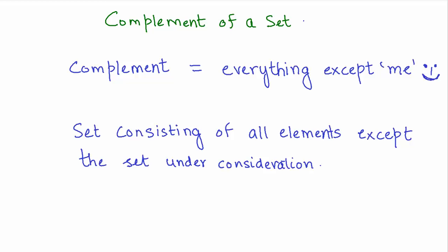Let's look at what we mean by complement of a set. To put it in a funny way, complement simply means a set telling everything else except myself — that's what a set thinks about. So the complement of a set is a set that consists of all the elements except the set under consideration.